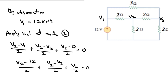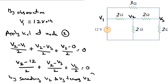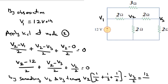By separating V2 and V3 terms, we get the equation: V2 multiplied by (1/2 + 1/2 + 1/2) minus V3 by 2, equals 12 by 2. This is equation number 1.